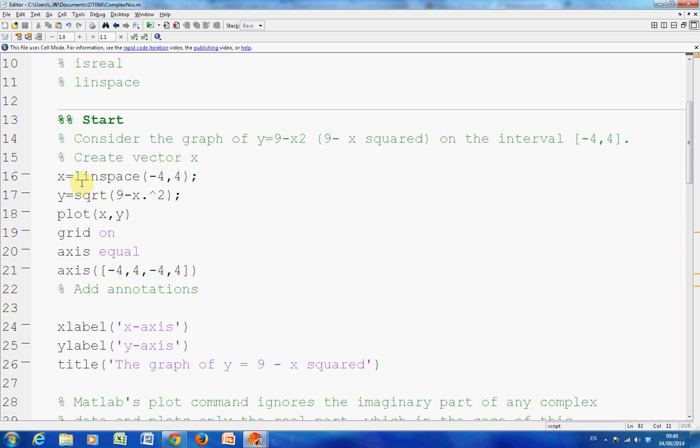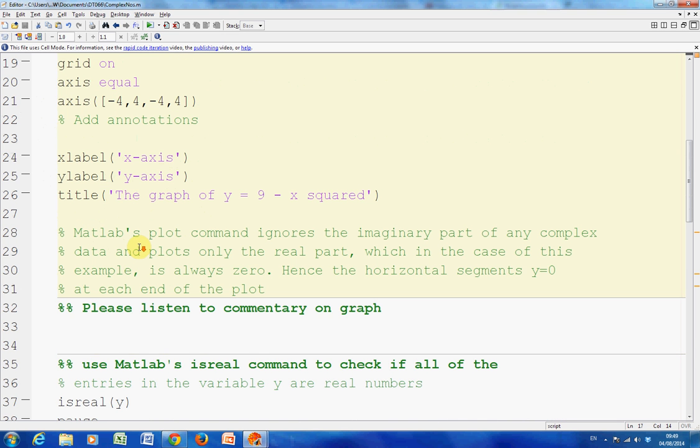We are going to create x as a vector from minus 4 to 4, and y is going to be the square root of 9 minus x squared. Where I've highlighted, the dot power means each element of x is going to be squared. So the first element minus 4 squared is plus 16. We end up with 9 minus 16, which is minus 7, and the square root of minus 7, which is a complex number.